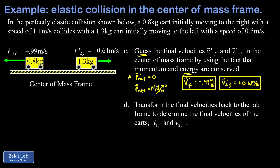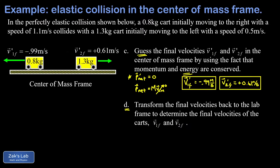Here's what it looks like after the collision in the center of mass frame: the 0.8 kilogram mass is moving to the left at 0.99 meters per second, and the 1.3 kilogram cart is moving to the right at 0.61 meters per second. Now all that's left is to transform this final state back to the lab frame.